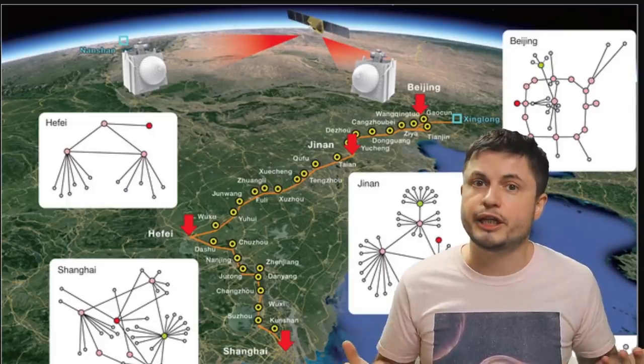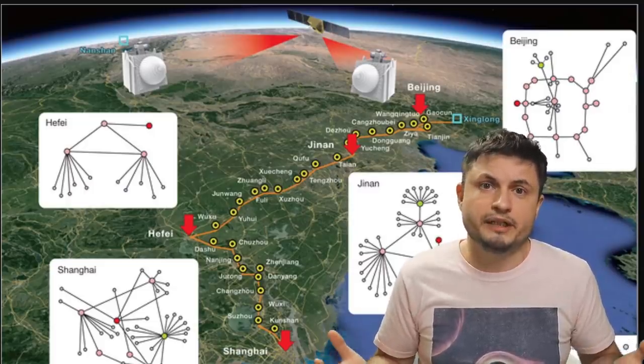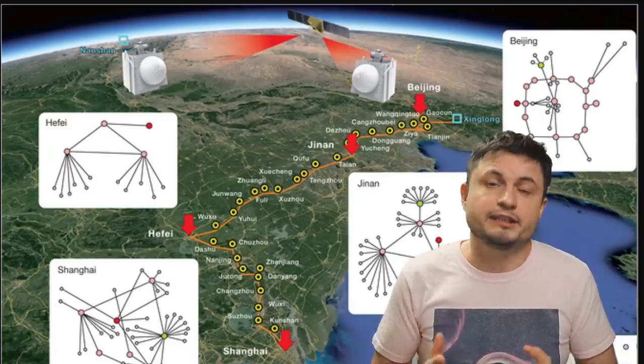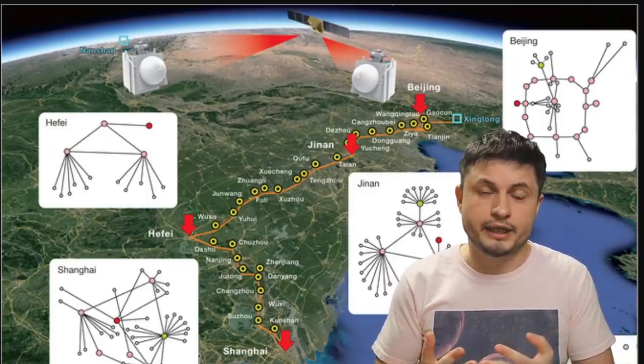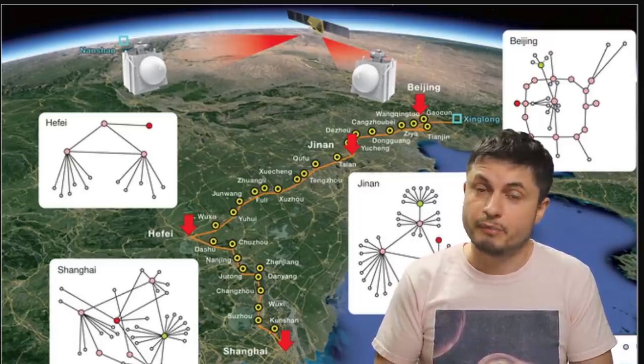And so today, I wanted to briefly talk about why you wouldn't really call this quantum internet either. It's a network, it's a quantum network, and it's a network that does use quantum mechanics. But it's not really internet as we know it. It doesn't really allow us to communicate using quantum mechanical bits or qubits. But it does help us with something extremely important. It helps us with security.